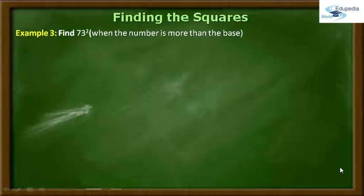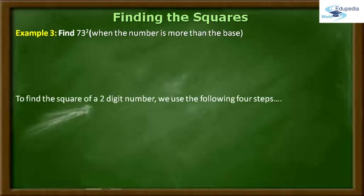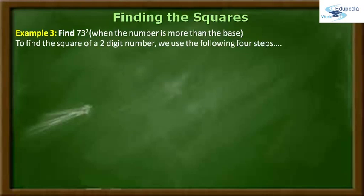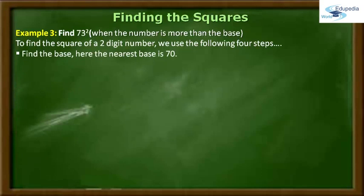In order to find the square of the given number 73, we usually follow the following four steps. The first step is to find the base for the given number 73, and the nearest base for 73 is 70.